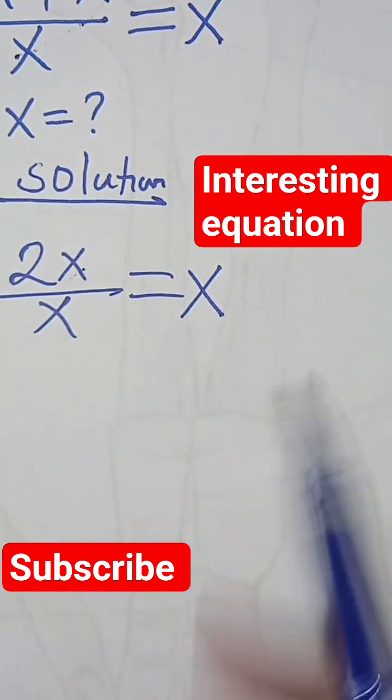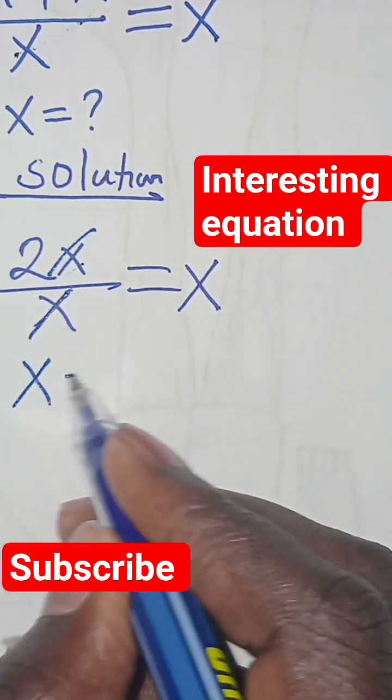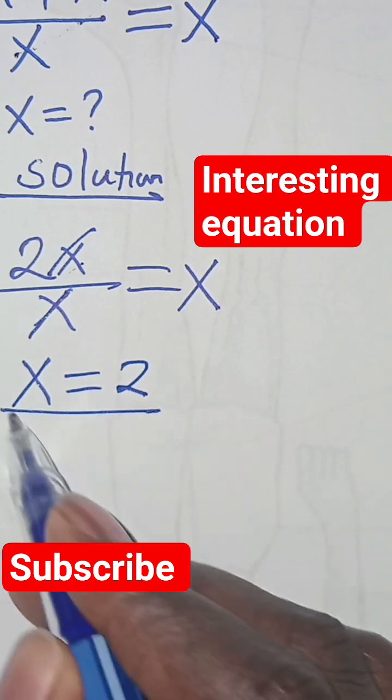x plus x, this is 2x divided by x, this is equal to x. So we simplify here. The first value of x with the first method, x is equal to 2.